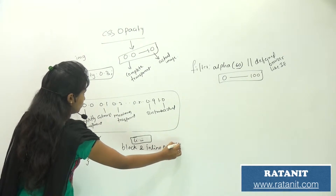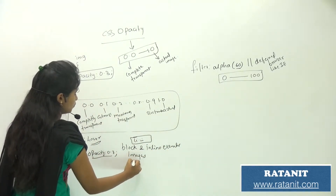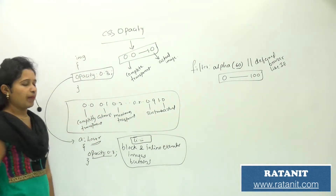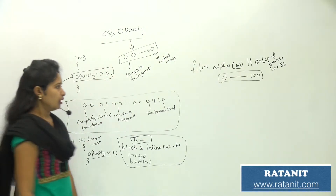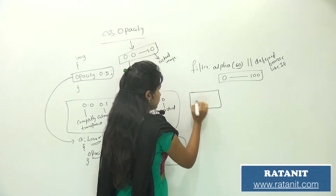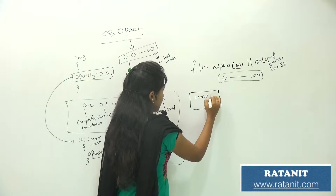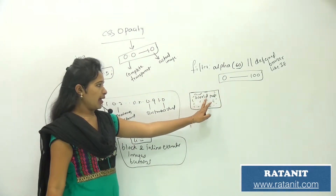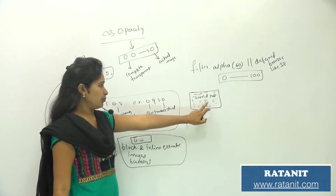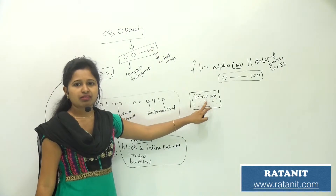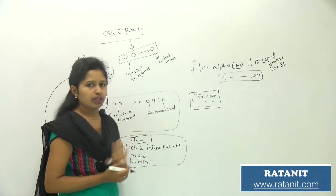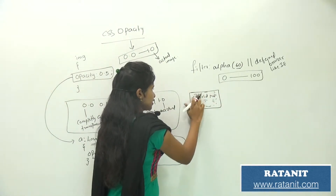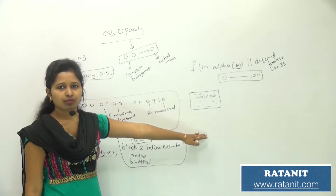Opacity can be used on block and inline elements, images, and buttons. For example, if I give my image an opacity of 0.5, and my image is in a box — say a world map image — with text on top of it, when I apply opacity to the image, the text on top also becomes blurred. The text becomes very hard to read.